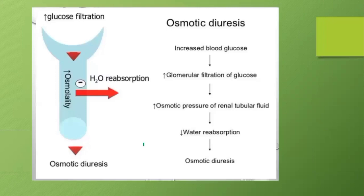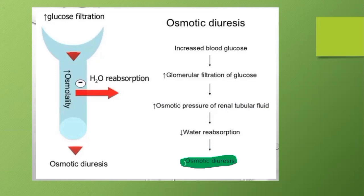Regarding osmotic diuresis: when there is increased blood glucose, there is increased glomerular filtration of glucose and increased osmotic pressure in the renal tubular fluid, leading to decreased water reabsorption and osmotic diuresis. Mannitol is the diuretic that causes osmotic diuresis. It is used in cerebral edema and idiopathic intracranial hypertension — an important topic frequently asked in recalls and clinical cases.